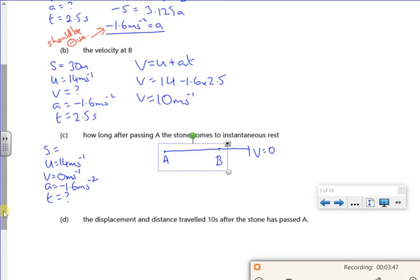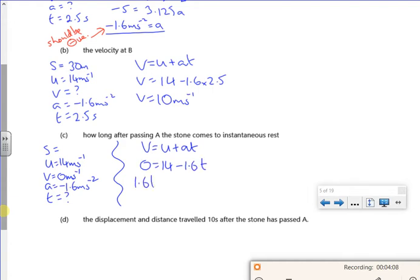T is what I want. So the equation that I'll use here is just V equals U plus AT. So 0 is 14 minus 1.6T. So 1.6T is 14, divide by 1.6. And that gives me 8.75 seconds. So I'm just subbing in the numbers.